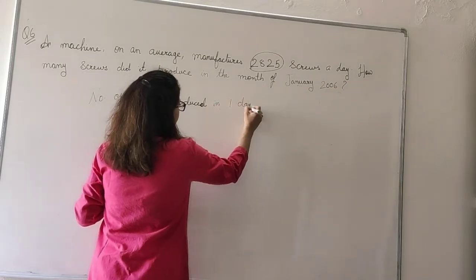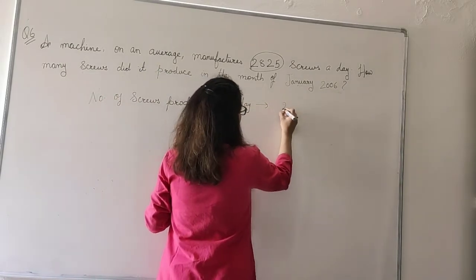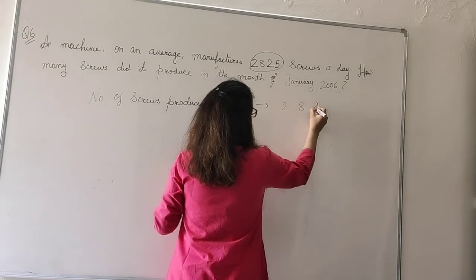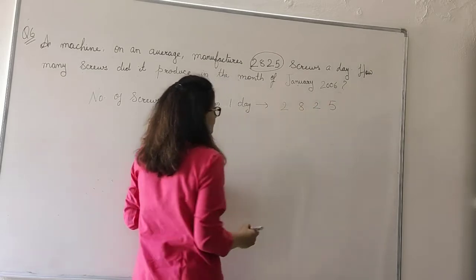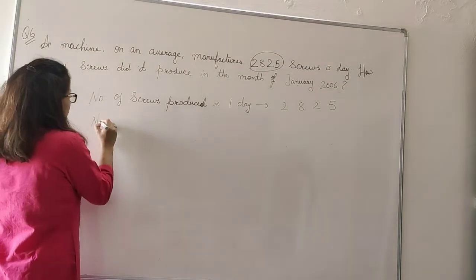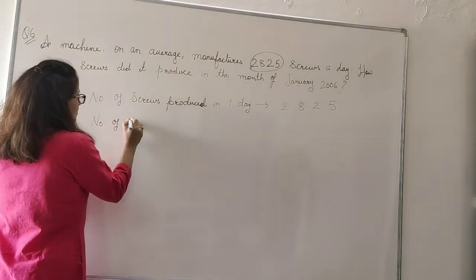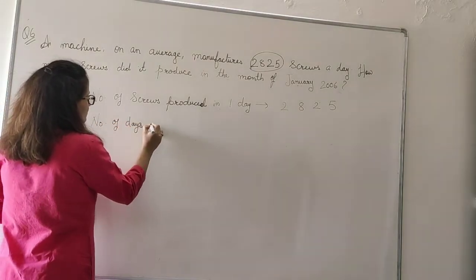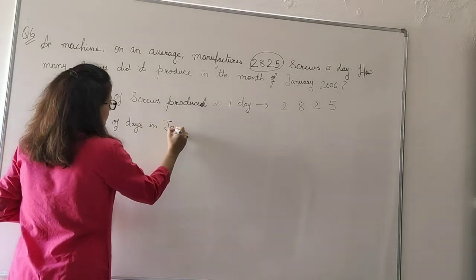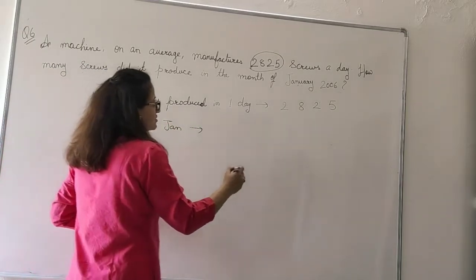Number of screws produced in one day: that is 2, 8, 2, 5. Number of days in January: it is 31. So to get it, we will multiply the thing with 31.